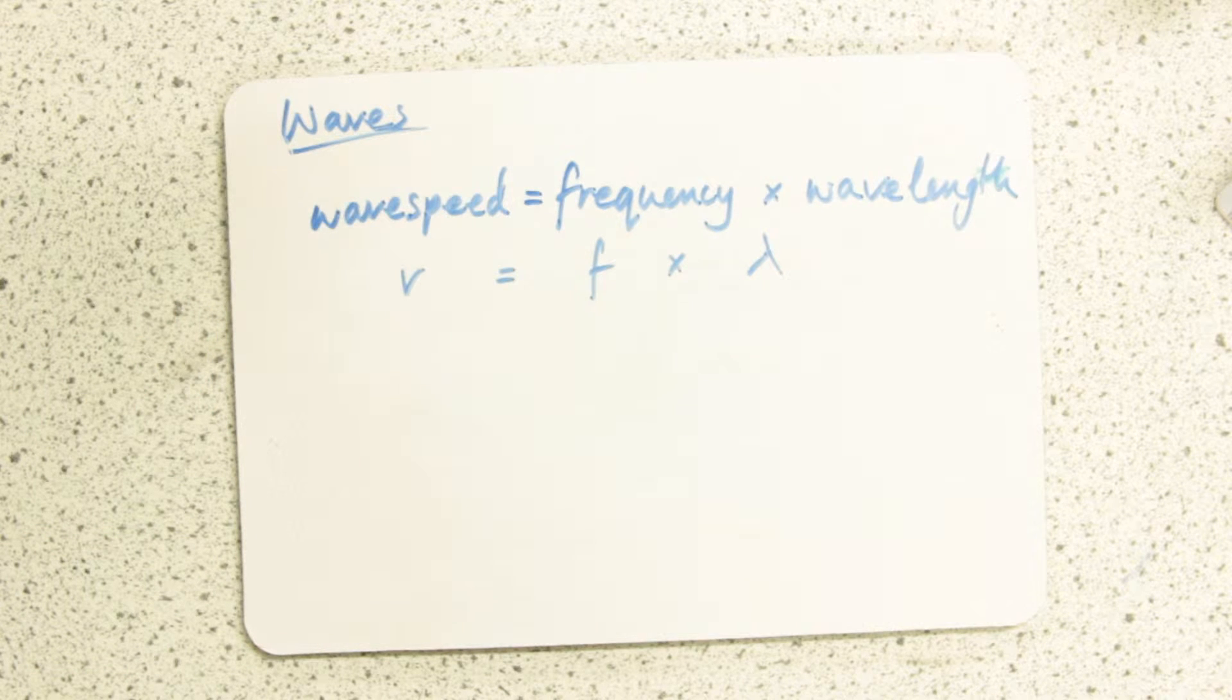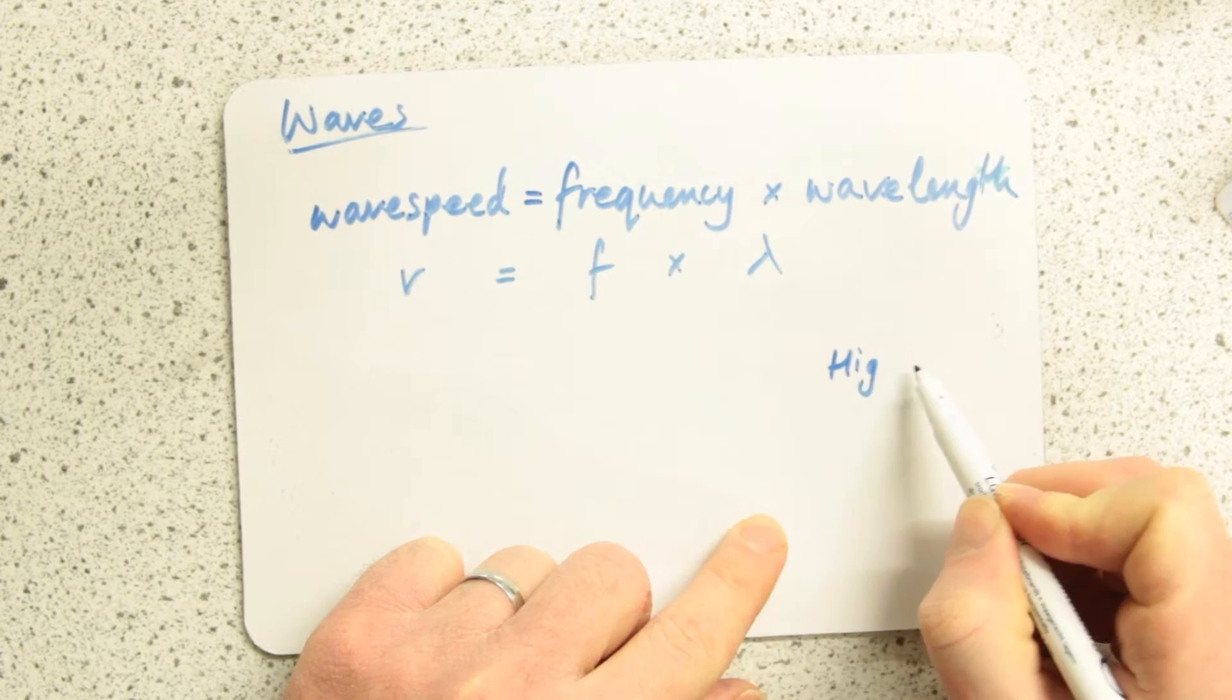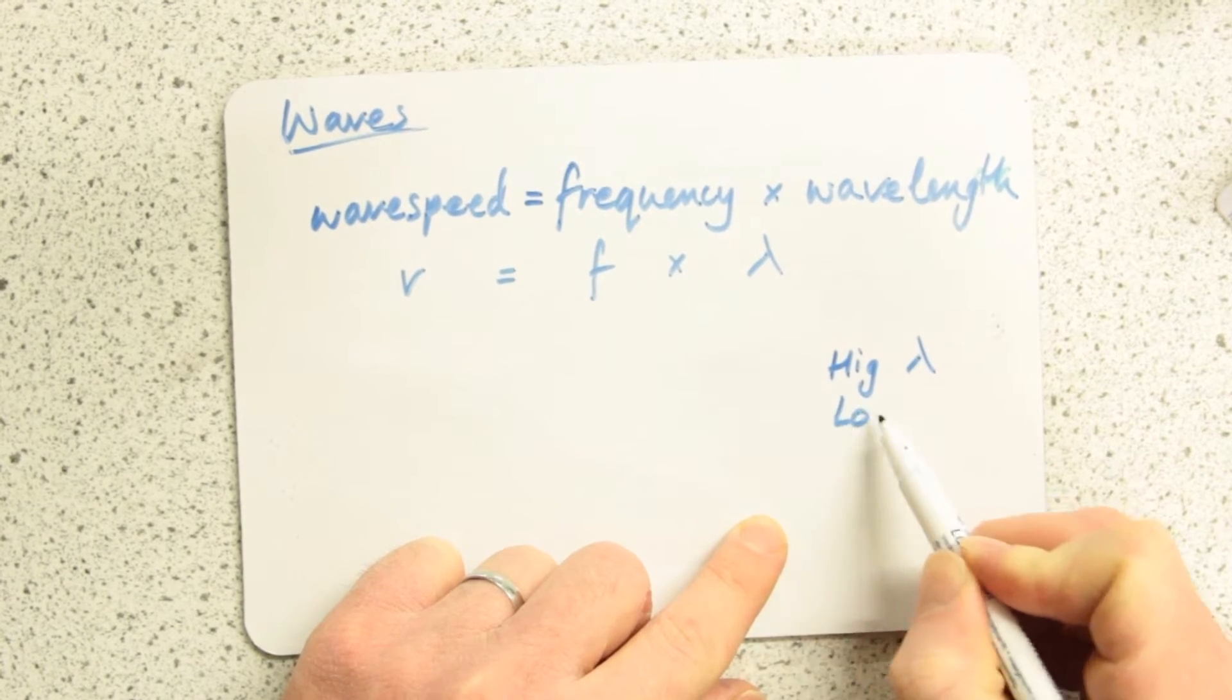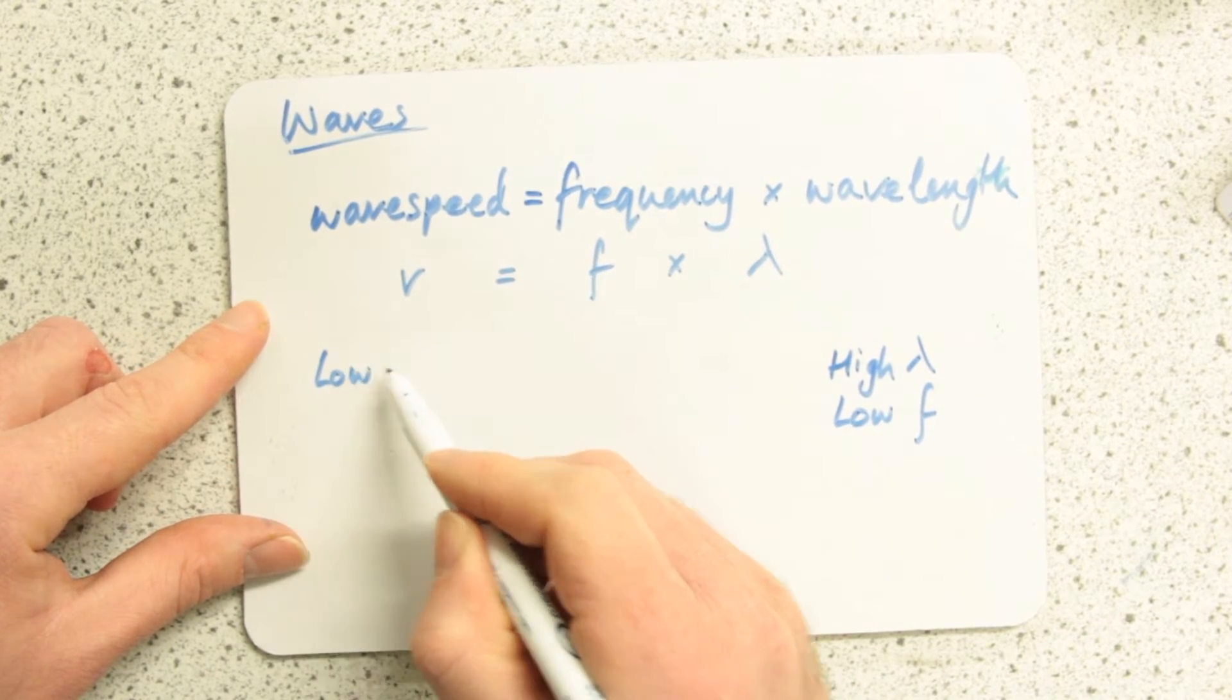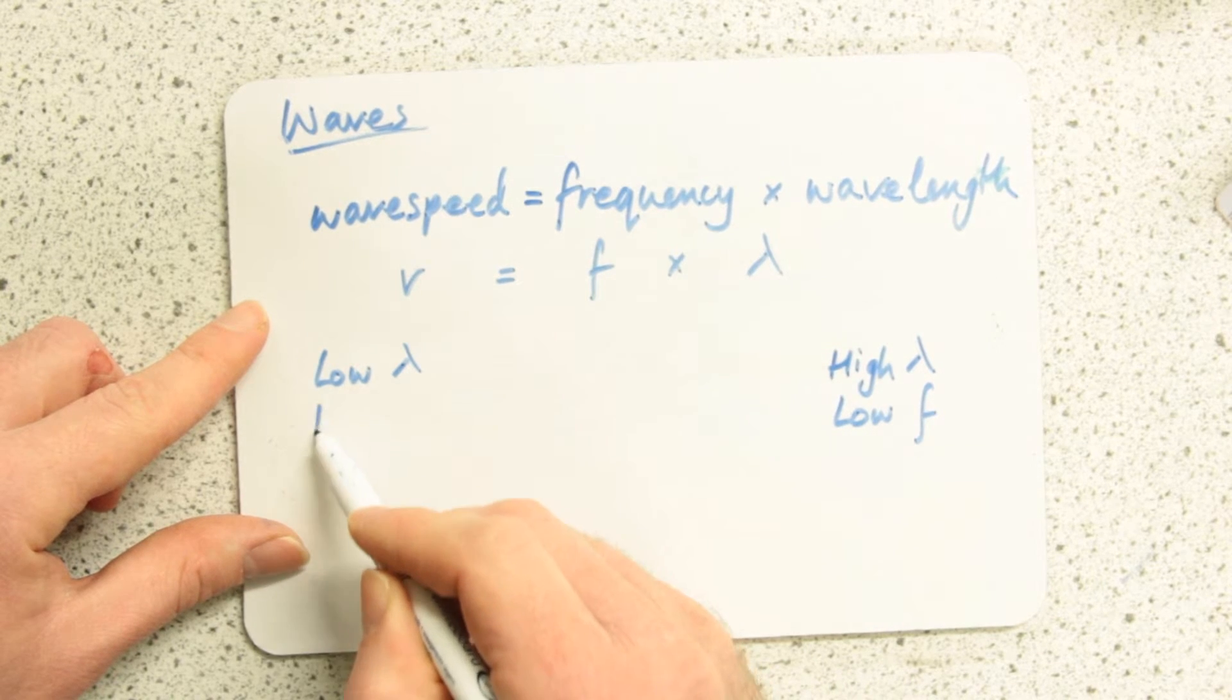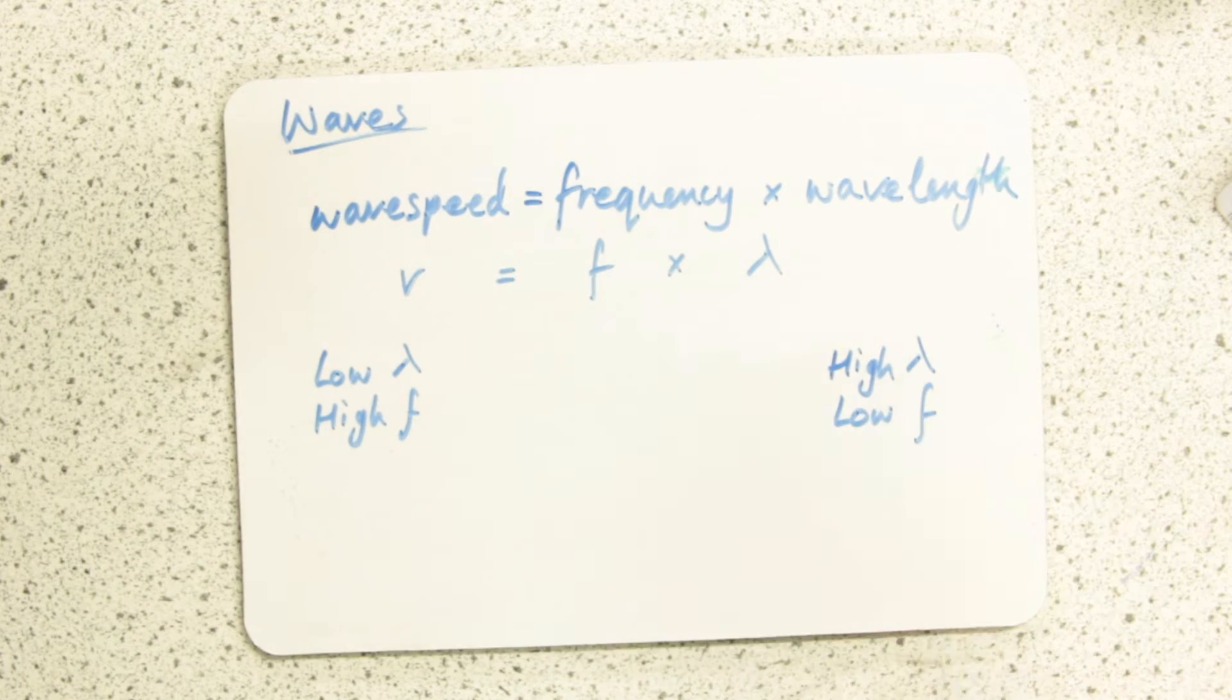Hopefully then with this you can understand that the electromagnetic spectrum is all the same. It's just going from high wavelength and low frequency over this end to low wavelength, short wavelength, and high frequency at this end. And we just remember them in order.